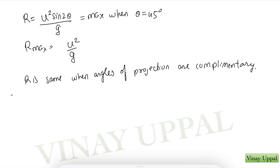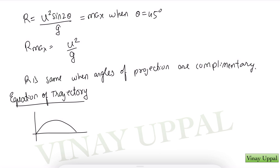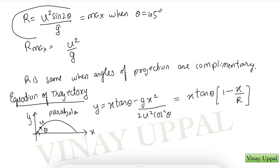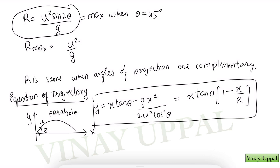The equation of trajectory gives a relation between x and y coordinates: y = x·tanθ − gx²/(2u²cos²θ). Another form is y = x·tanθ·(1 − x/R). Whenever you don't need time, the equation of trajectory is helpful. Between any two points at height difference h, the speed relationship is v₂² = v₁² − 2gh, derivable from kinematics or energy conservation.